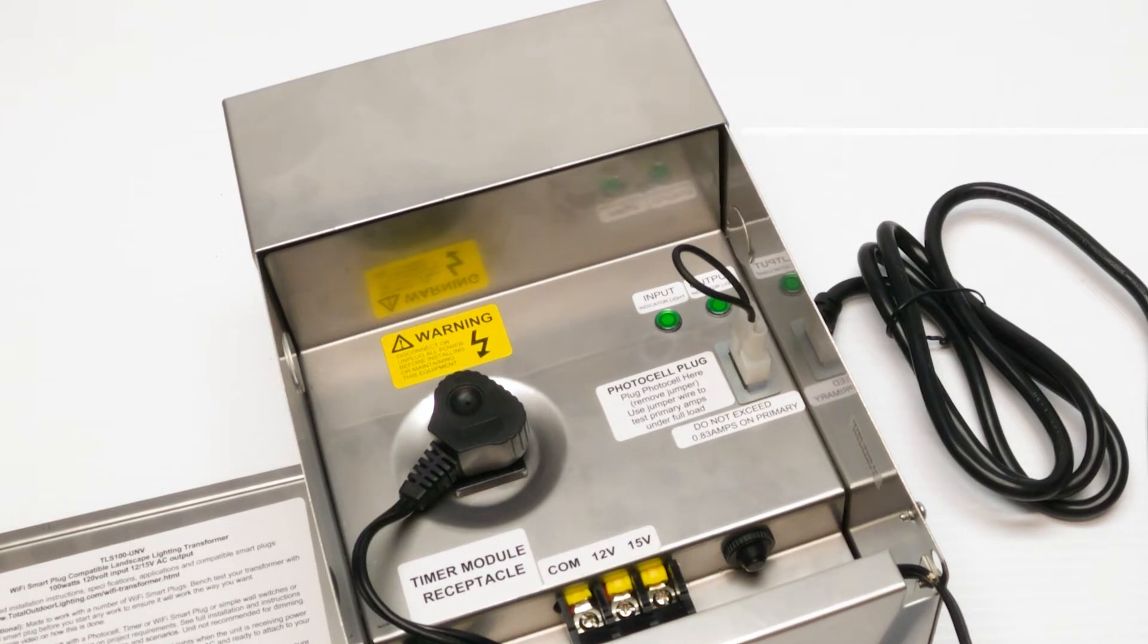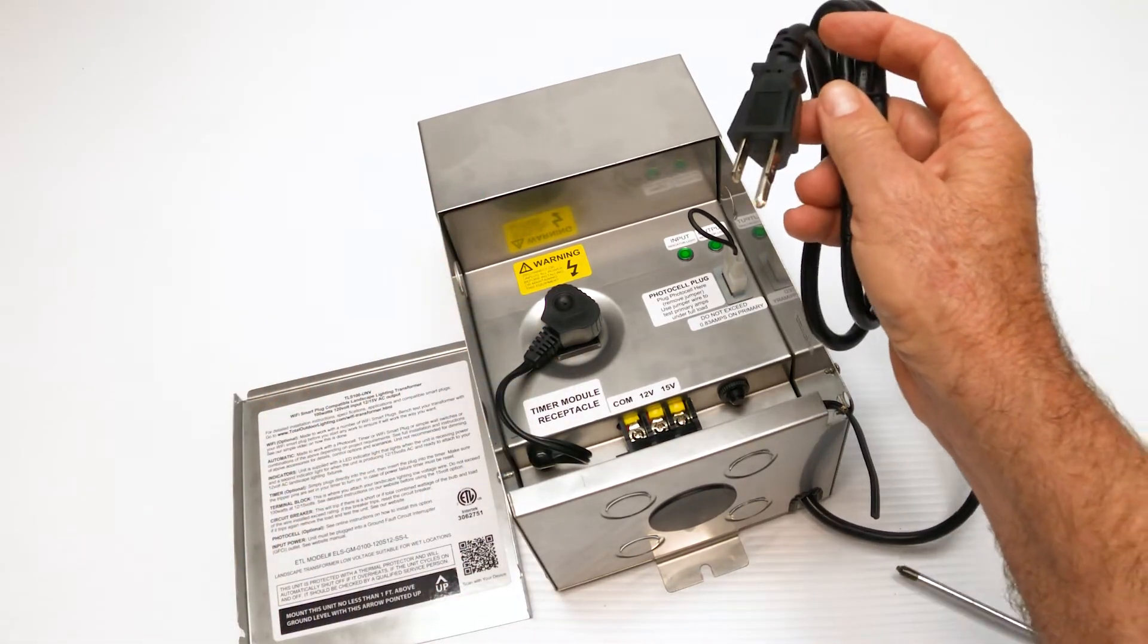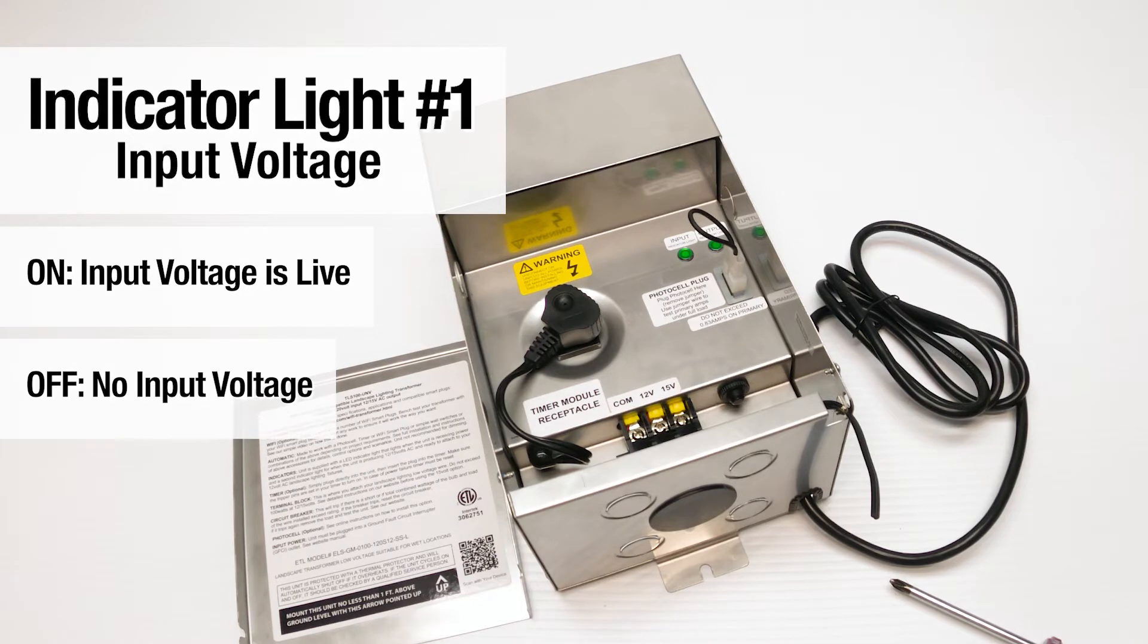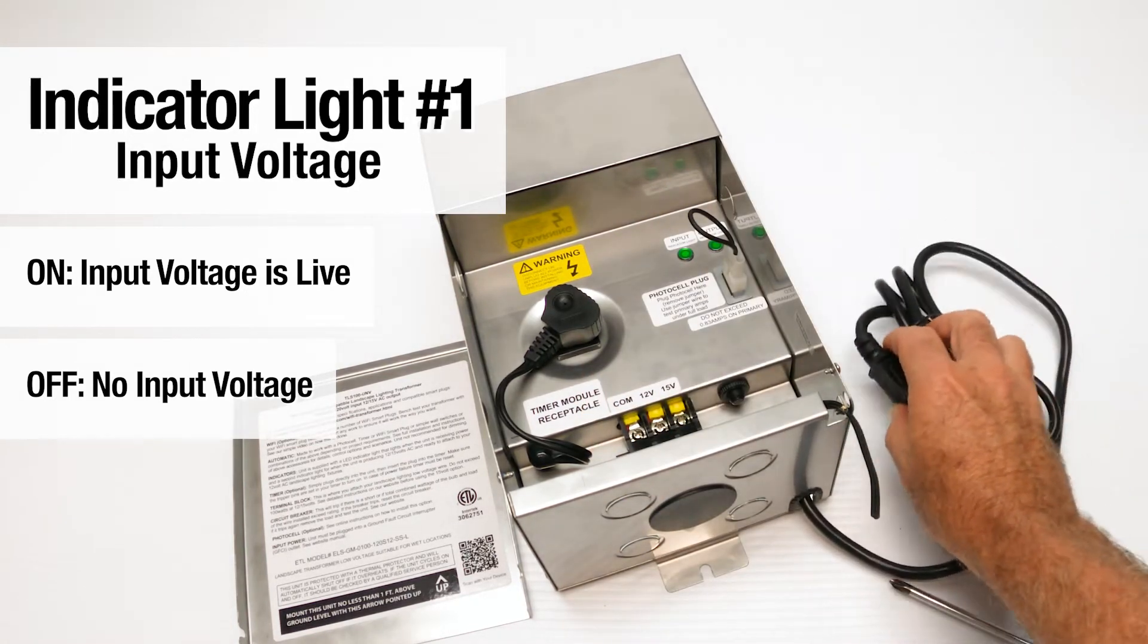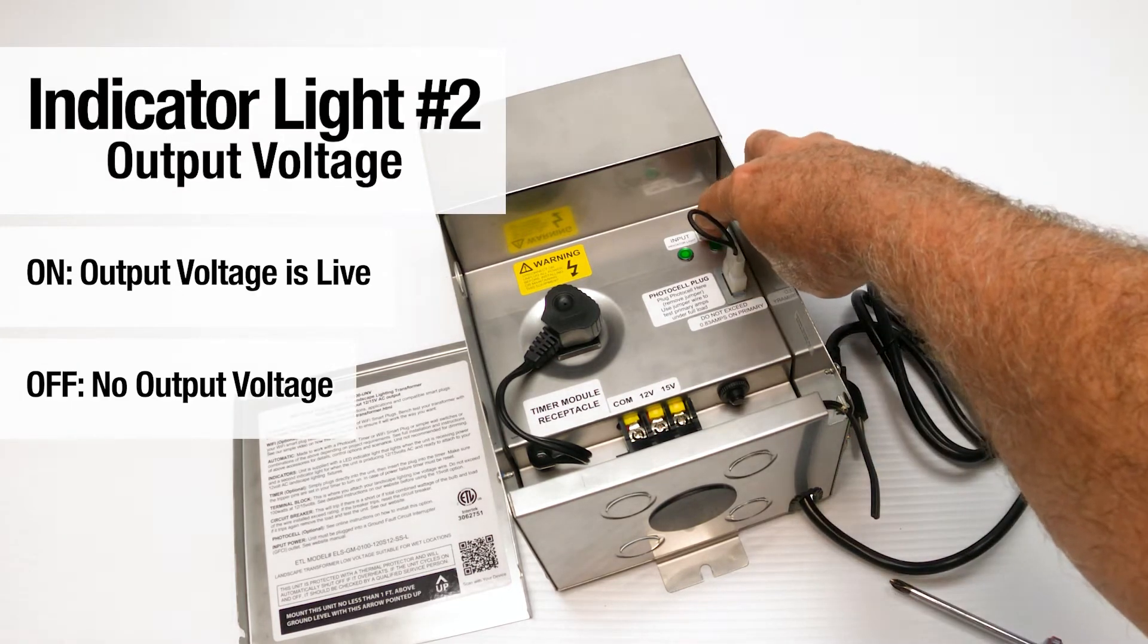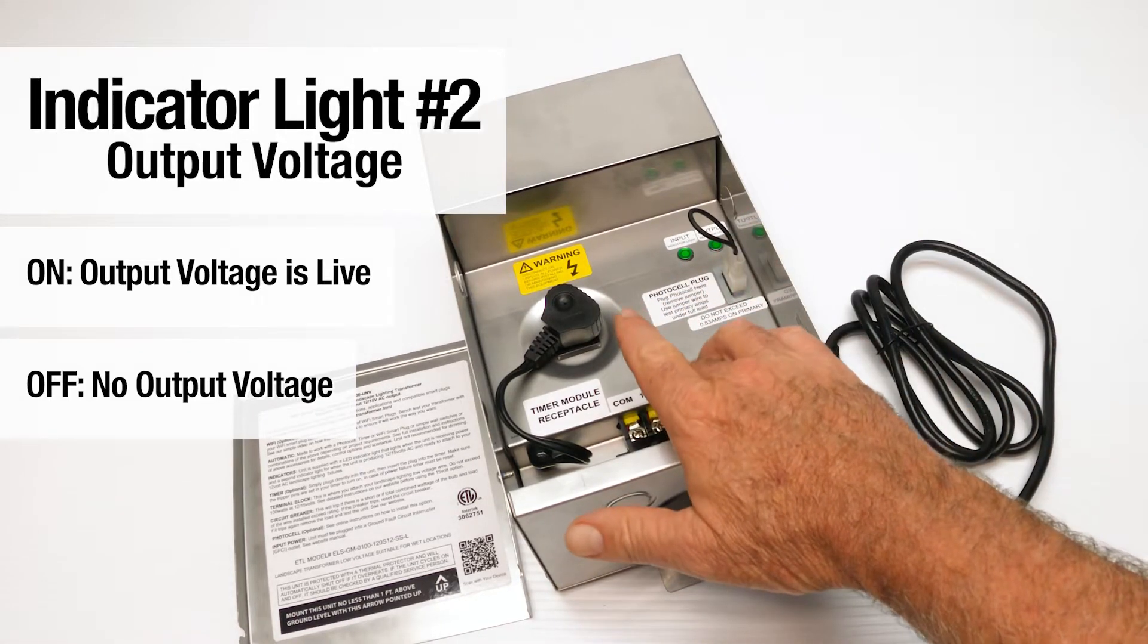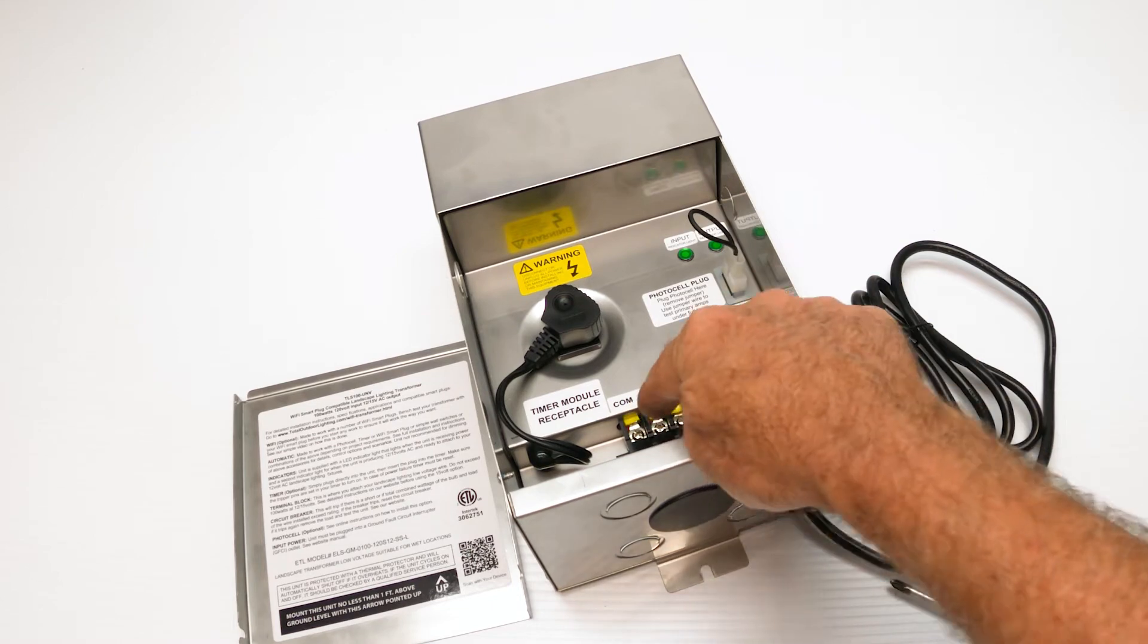And I want to note there's two indicator lights here. Indicator lights are really important. It's because of all the questions we've got over the years regarding whether or not the transformer is working properly. When you plug the unit in, it'll tell you right away if we have 120 volts coming to the unit, regular household current. So with that light on and this plugged in, you're good to go. The second light you're going to look for is the output light. If the second light's on, that means you're generating 12 volts. And there's 12 volts coming down here to the terminal bus.